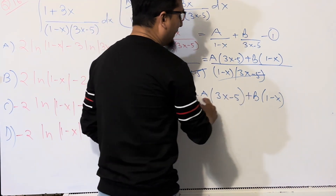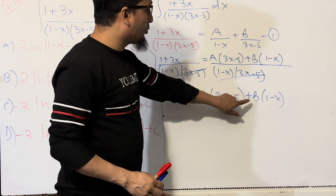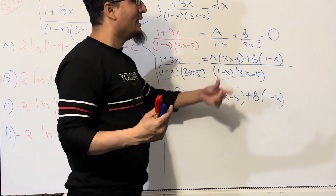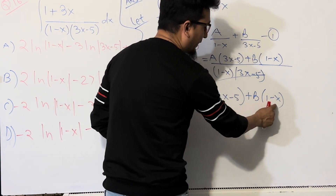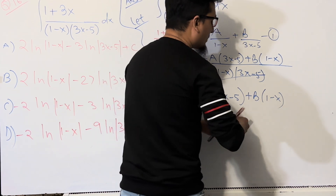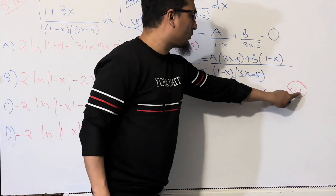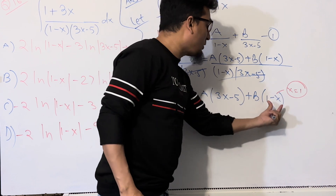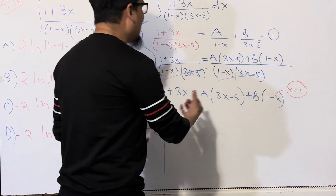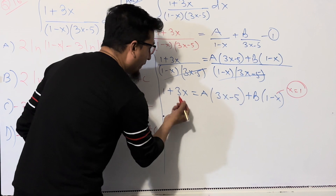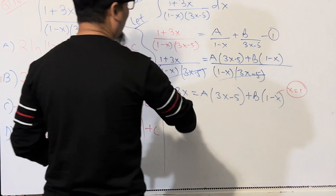Both A and B are unknown. However, if you know the value of one, it's easy to find the other. The strategy is: substitute a value of x that makes one term zero. Since we have (1 - x), if x = 1, then (1 - x) = 0, making the B term vanish. So substitute x = 1 on both sides.